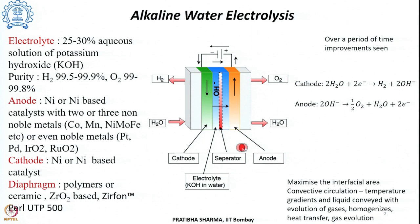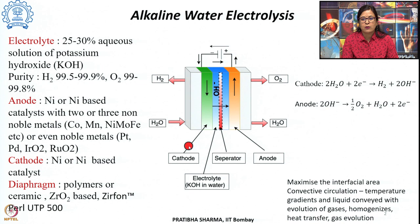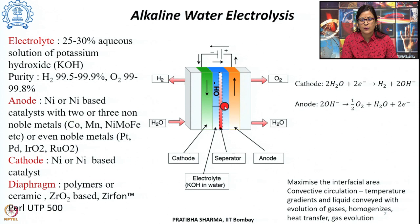The process uses an electrochemical cell with an alkaline electrolyte. The cell has two electrodes, a separator, and current collectors. Water is fed onto the cathode side where hydrogen gas is evolved and hydroxyl ions are produced. These hydroxyl ions migrate through the separator or diaphragm and reach the anode side.